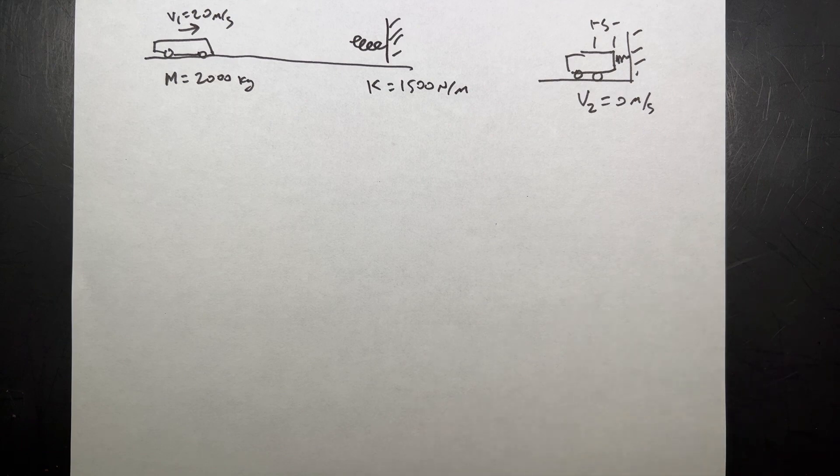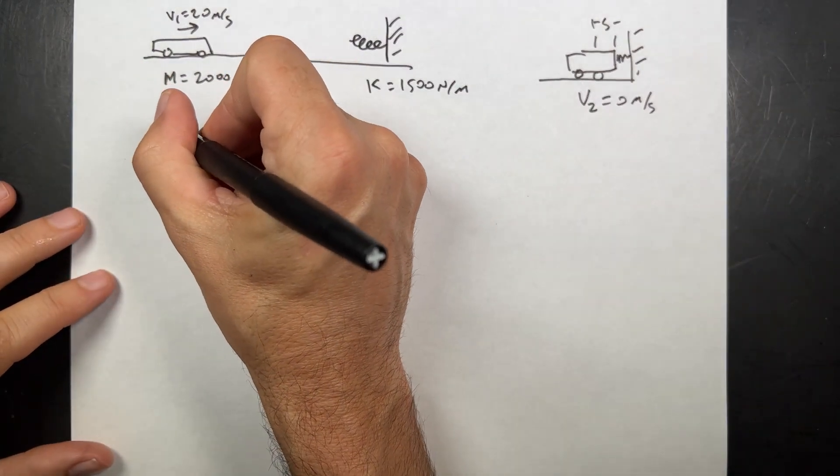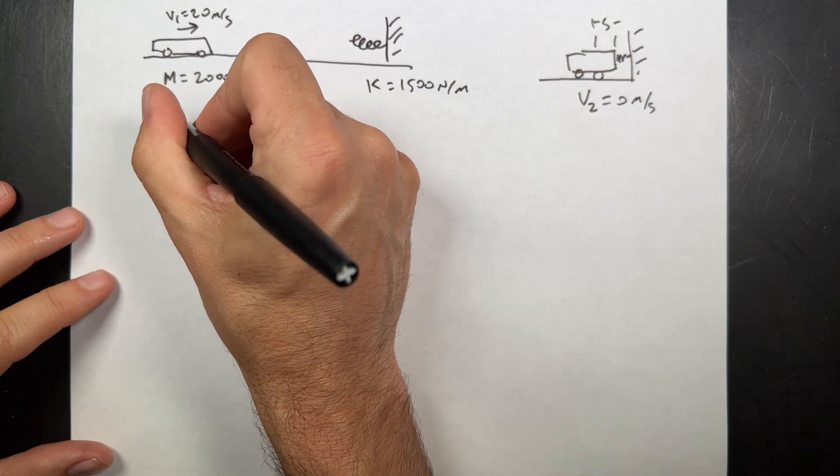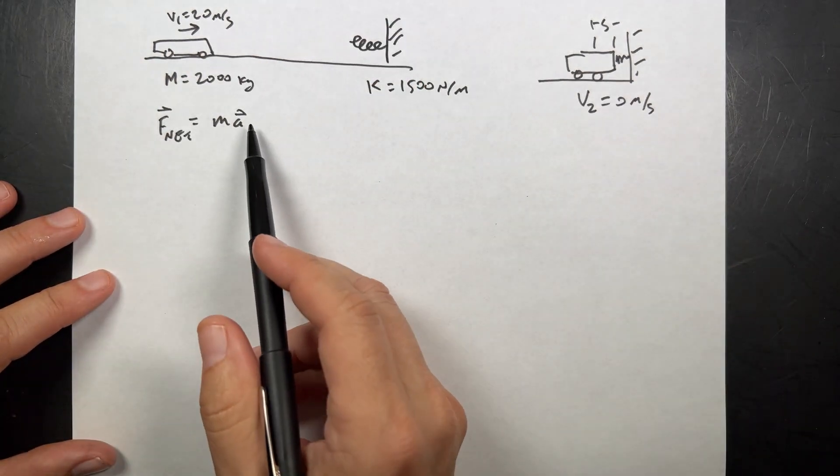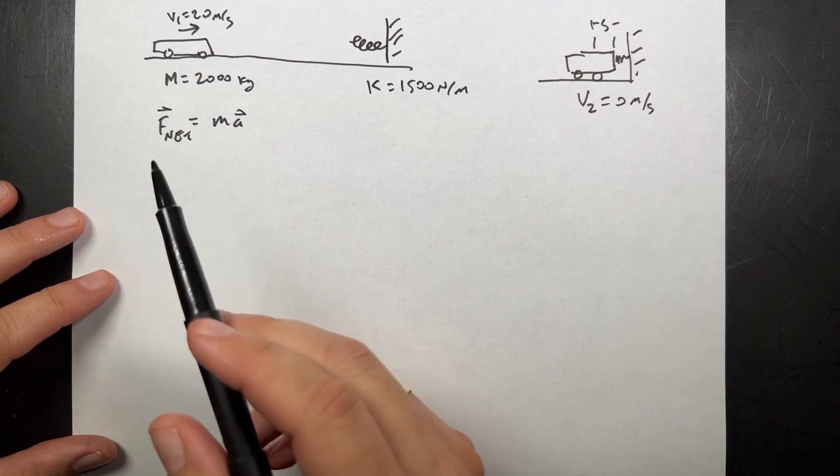a non-constant acceleration. You can't really use Newton's second law. It's just not going to work. Let's just set F net equals MA. That's not going to work. Because acceleration is not constant, the force is not constant. Instead,